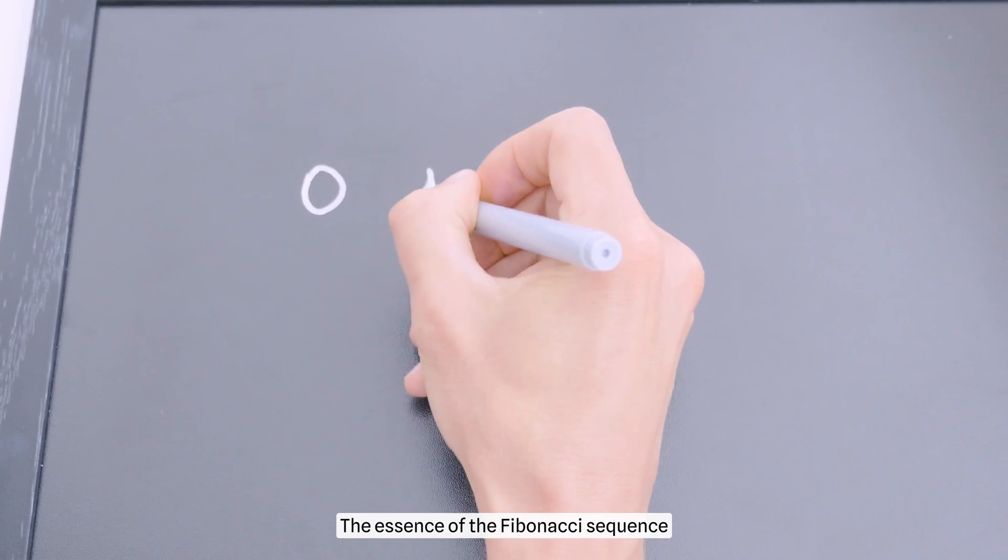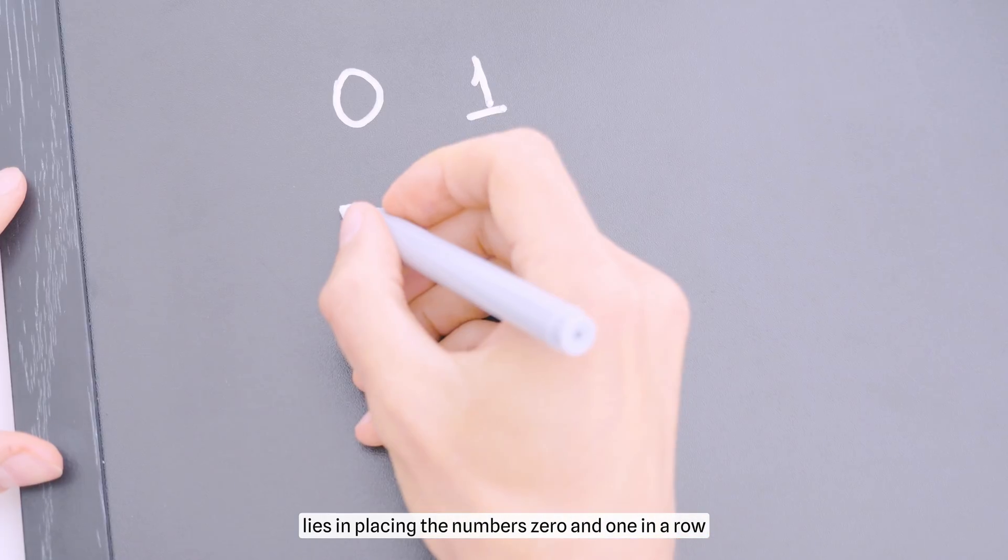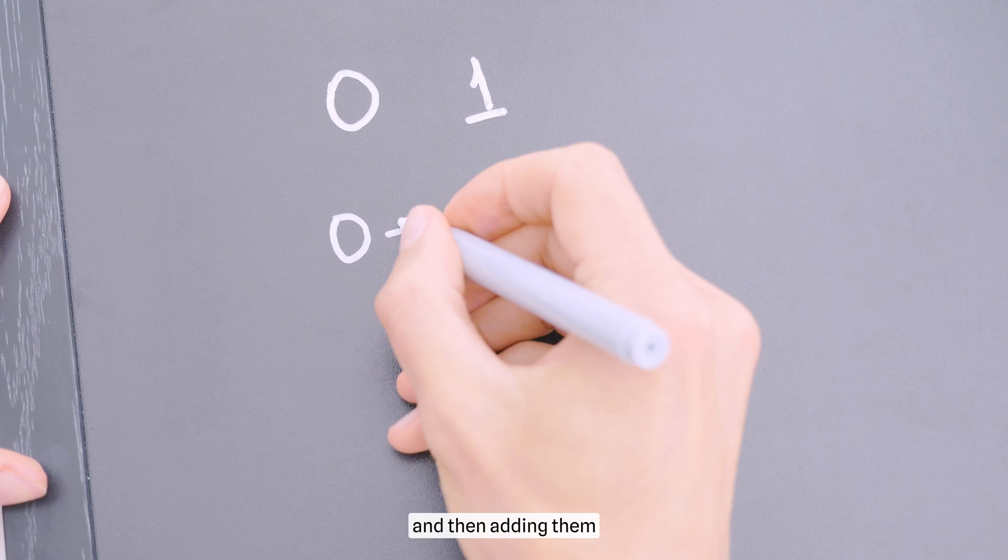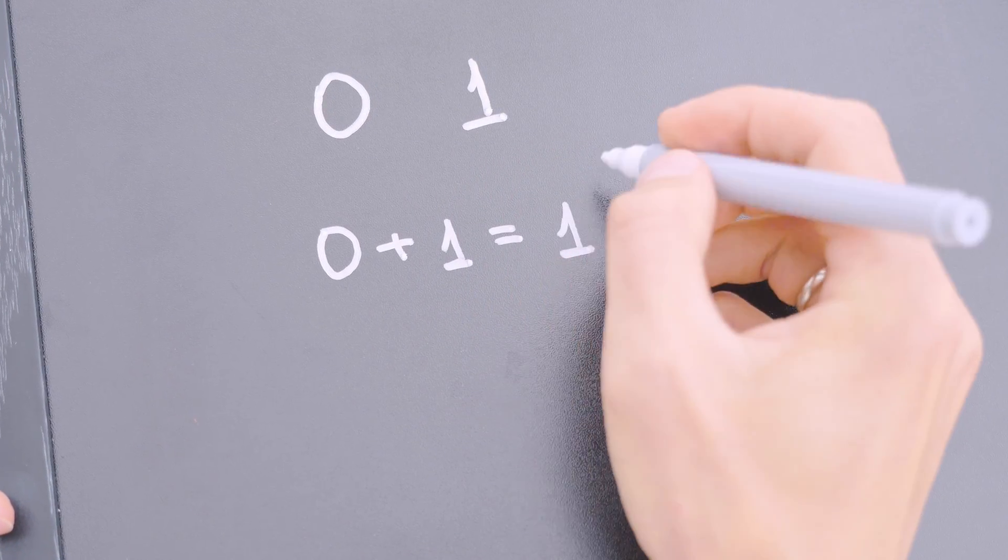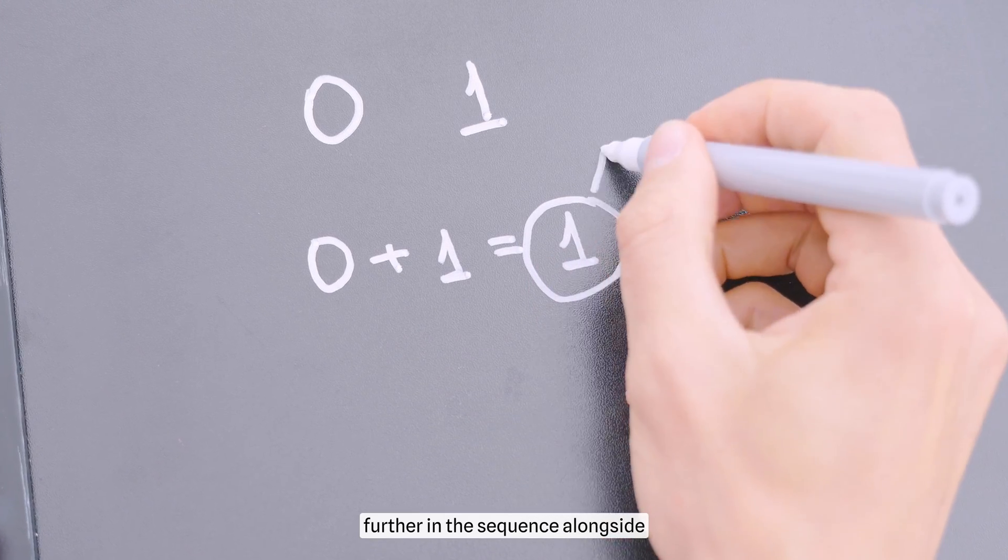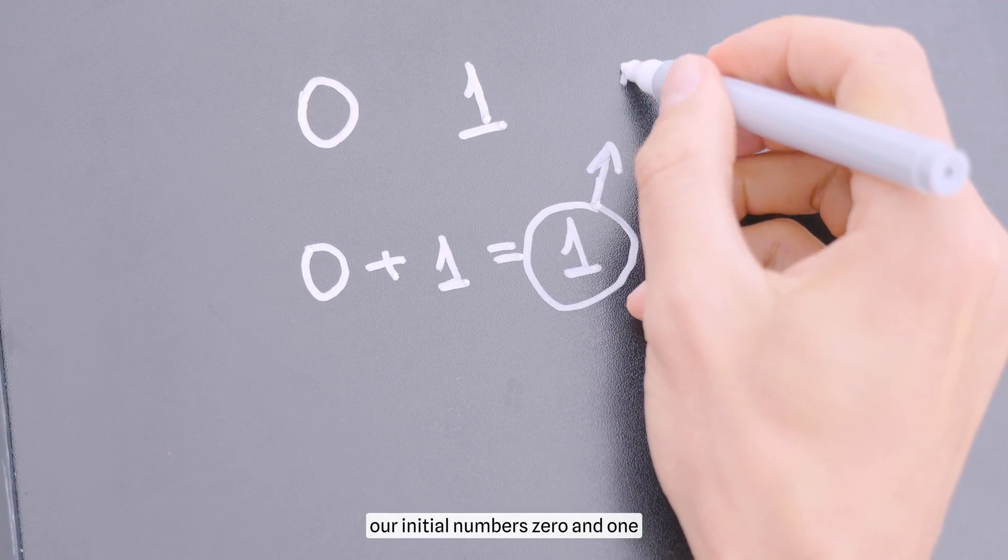The essence of the Fibonacci sequence lies in placing the numbers 0 and 1 in a row, and then adding them. This results in the digit 1. We then place this number further in the sequence alongside our initial numbers 0 and 1.